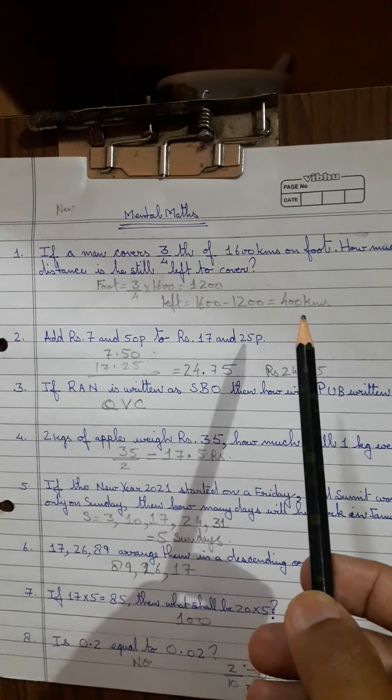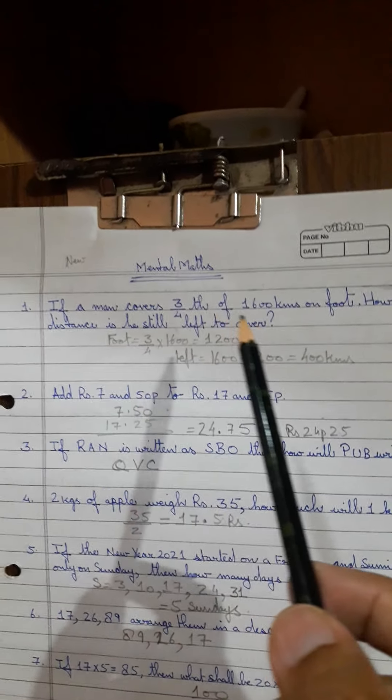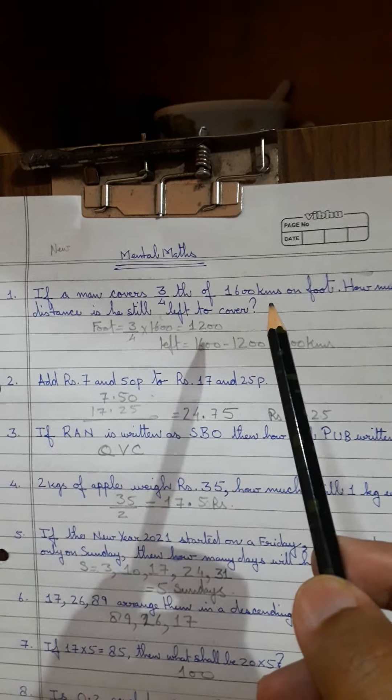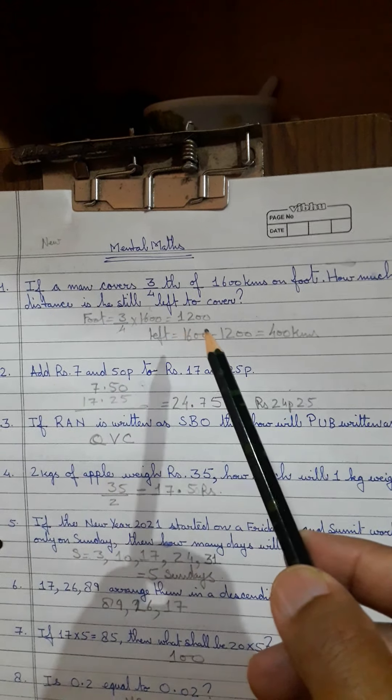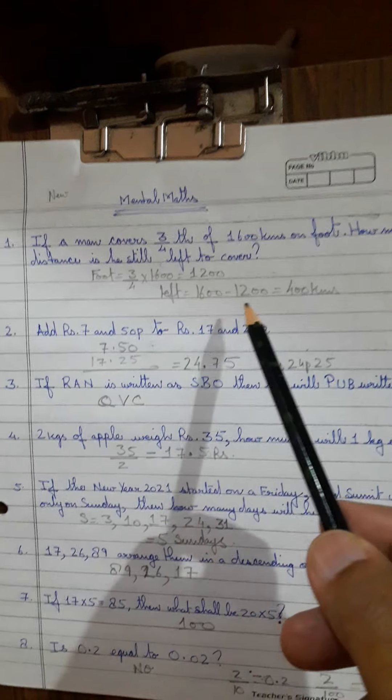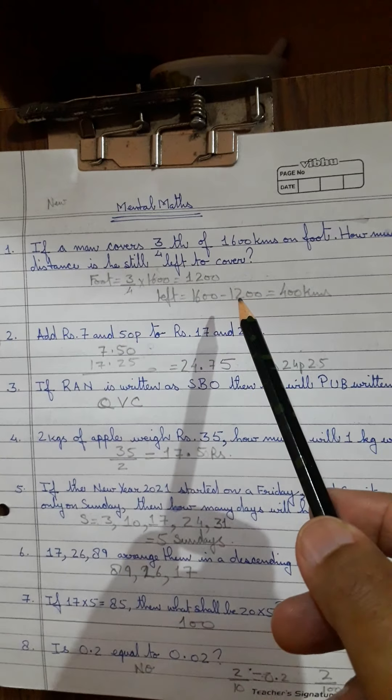First answer is 400 kilometers. How? Three-fourths of 1600 kilometers he covers on foot, so just take out three-fourths of 1600, that's 1200. Left would be how much? One-fourth distance is left, right?